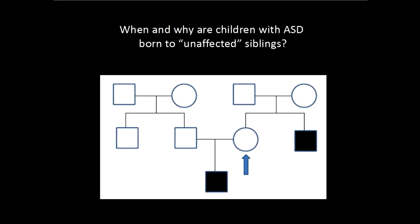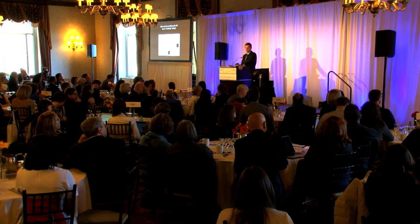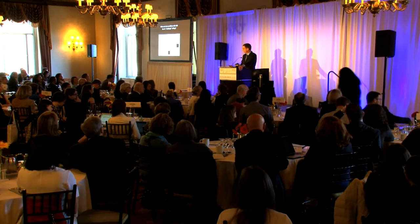So when and why are children with ASD born to the unaffected siblings of children with autism? Most children with autism are born to parents who are not affected. From a genetic standpoint, one reason is de novo mutations — germline mutations not in the parent's body but in the baby's body, resulting from a mutation in a sperm or egg cell. These may account for 10 to 20 percent of autism cases. But de novo mutations don't explain why autism is 20 times more recurrent in a sibling, because those mutations don't pass to siblings.